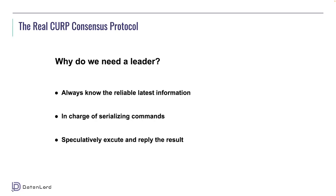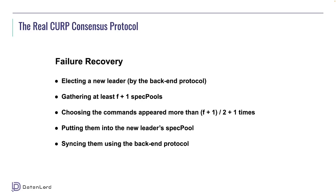The leader also speculatively executes the command and attaches the result to the reply, so the client can only get the result in the leader's reply. This is the normal procedure of the CURP consensus protocol. Now let's talk about the failure recovery procedure. The failure recovery or leader change procedure consists of five steps: first, we select a new leader, done by the backend protocol like RAFT. Then the new leader gathers at least f+1 spec pools. After getting enough spec pools, it picks commands that appeared in those spec pools more than (f+1)/2 + 1 times.